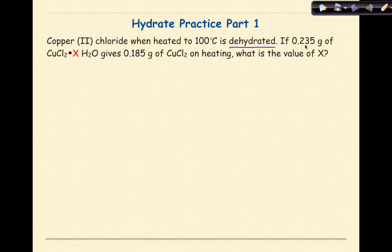If 0.235 grams of copper 2 chloride, with some number of water molecules, gives 0.185 grams of copper 2 chloride anhydrous on heating, what is the value of X? So what are we trying to do here?